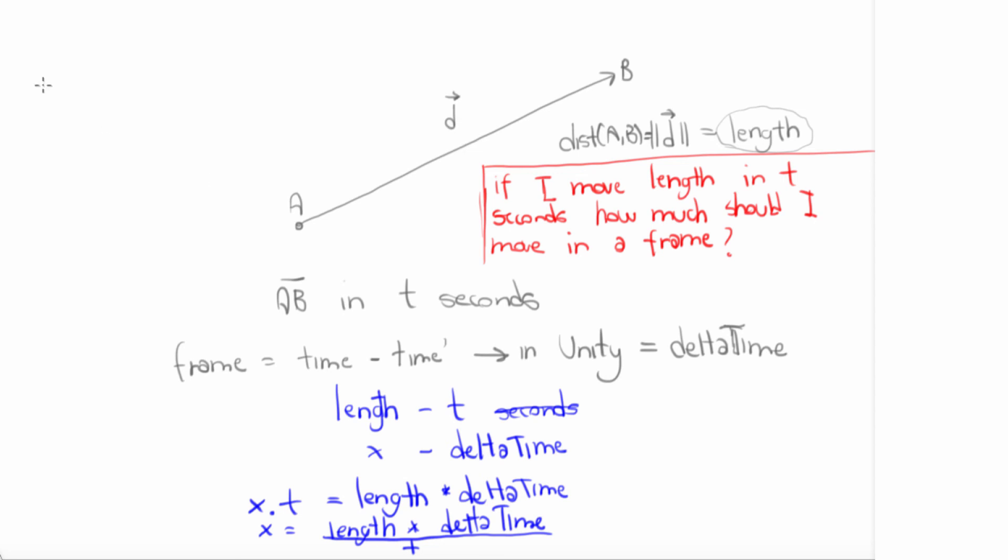And of course there is. If I take D prime, that's gonna be our vector D divided by the length of vector D. That's basically the unit vector of D. The size of D prime is equal to 1 always. So what we're gonna do is at each frame we're gonna move by D prime times X.